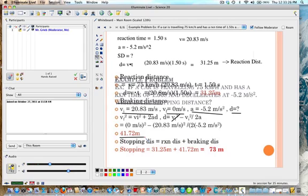So the stopping distance is going to be the reaction distance plus the braking distance. So we'll take our first answer, 31.25 meters, and add it to our second answer, 41.72 meters, and obtain the answer of 73 meters. Now taking a look at the information we had to begin with, we should have an answer rounded to two significant digits, which we did.